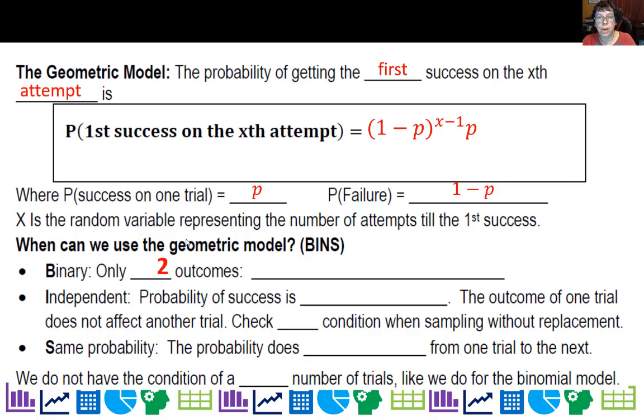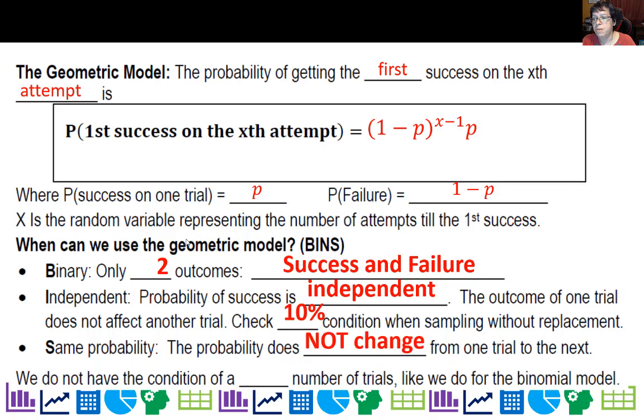When can we use this? When there are only two outcomes, success and failure. It needs to be independent, and we check the 10% condition. The probability does not change from one trial to the next. Unlike the binomial model, we don't need a fixed number of trials.